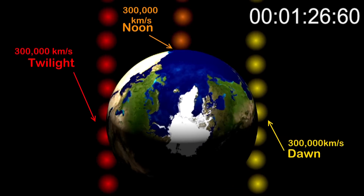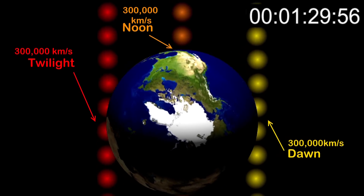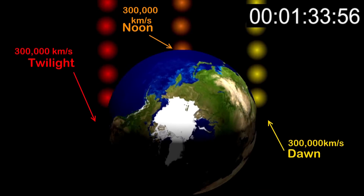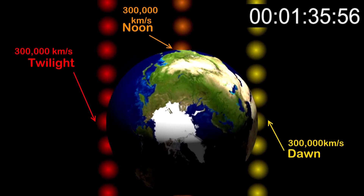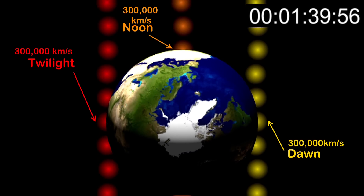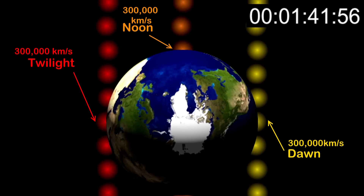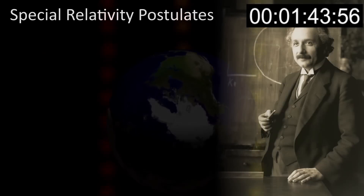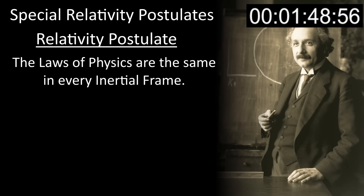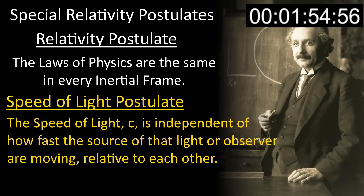They all measure it at the same speed. That was just the state of play at the dawn of the 20th century — light, for whatever reason, always had the same speed when measured. That's not a consequence of Einstein's special relativity; it's the strange fact he developed the theory to handle. He postulated only two things: that the laws of physics were invariant in all inertial frames, and that the speed of light is the same for all observers — it does not vary, it is invariant.